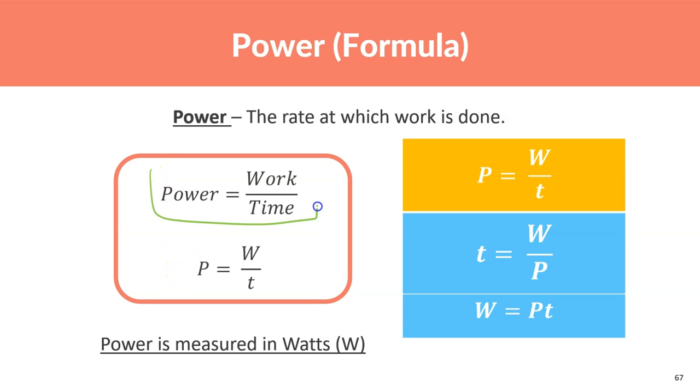So, power is the work you do divided by the time. The quicker you do it, or the shorter the time is, the more power you exert. Or the longer it is, the less power you exert. Pretty simple formula, power equals work over time. And then here are the algebraic manipulations if you want to memorize or copy it down.